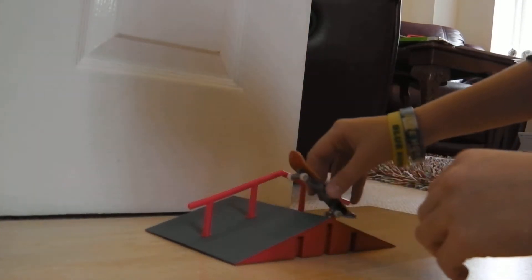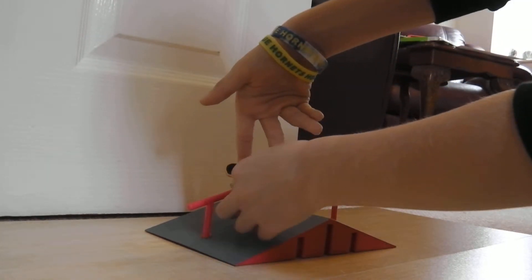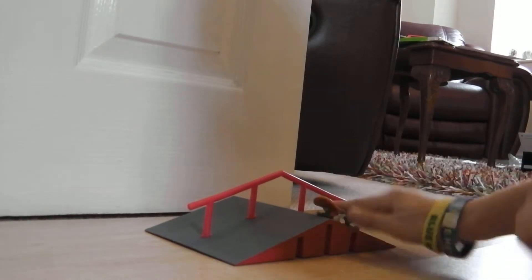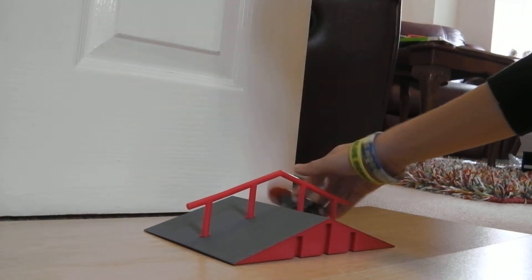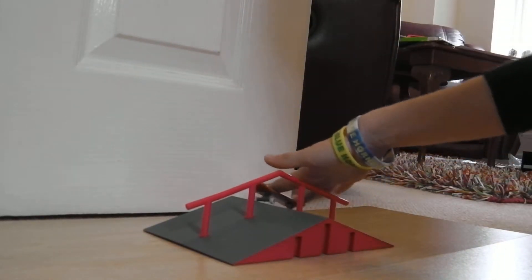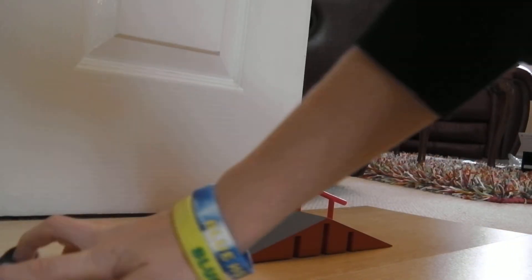Now board slide, ollie, for the BS backside board slide, you've got board slides like that. So the ollie and ride down like that, and for the FS, ollie and ride down like that. So FS forward slide and back side board slide.